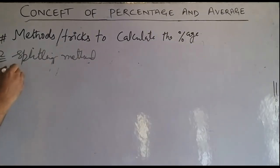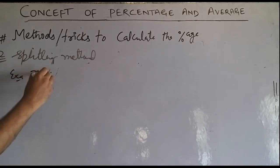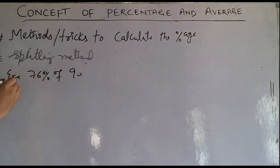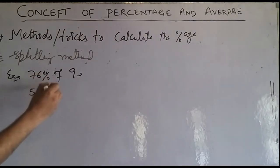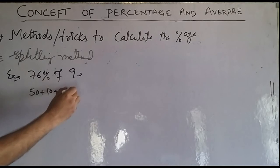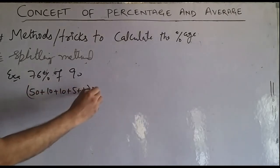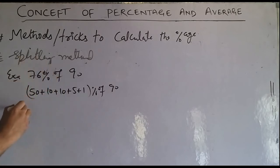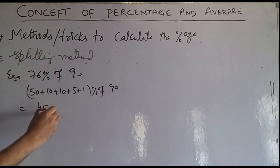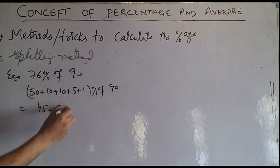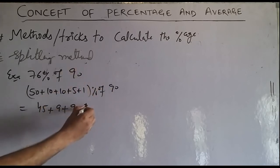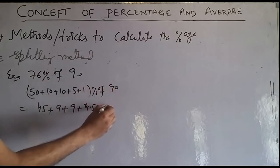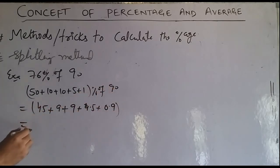For example, 76% of 90. I split this as 50% plus 10% plus 10% plus 5% plus 1%. 50% of 90 is 45, 10% of 90 is 9, 5% of 90 is 4.5, 1% of 90 is 0.9. Adding: 45 + 9 + 9 + 4.5 + 0.9 = 68.4.